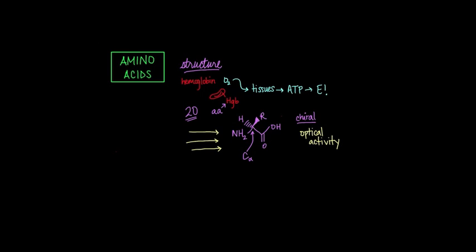Now it's important to note that there is one exception among the amino acids for chirality, and that is the amino acid glycine. That's because the side chain or R group for glycine is just a hydrogen atom.